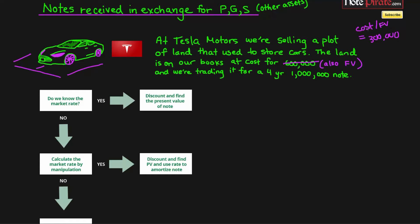In this case, we know the face value is $1,000,000, the term is 4 years. So we can calculate the market rate using manipulation. We're going to use the single sum formula. Future value equals present value times 1 plus r to the power of t. The future value is $1,000,000. The present value is $300,000, since the fair value essentially translates to its discounted value.